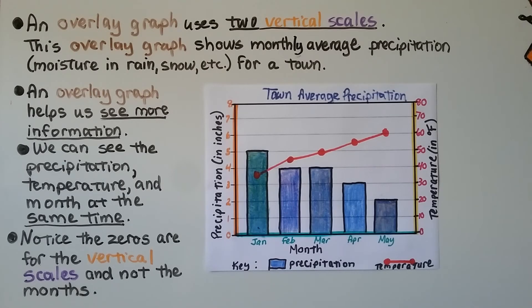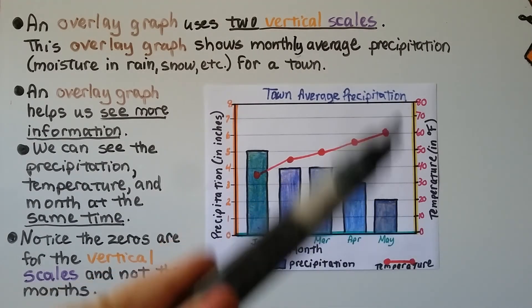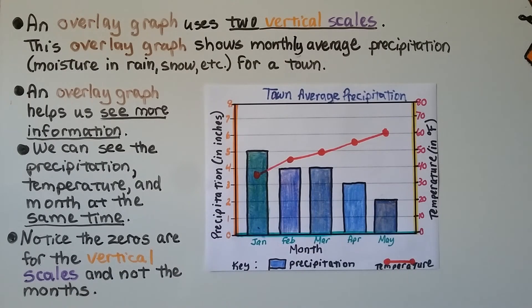An overlay graph uses two vertical scales. This one's got one on the left for precipitation in inches, and one on the right for temperature in degree Fahrenheit. And this overlay graph shows monthly average precipitation, which means moisture in rain, snow, like dew, etc. for a town.